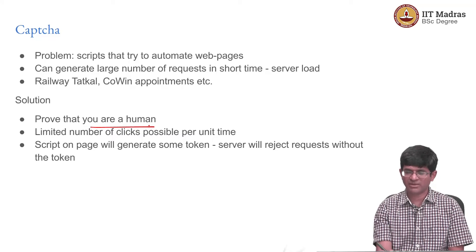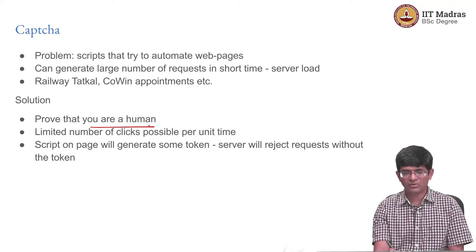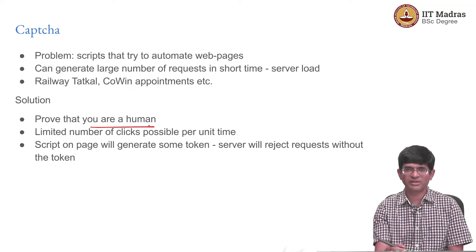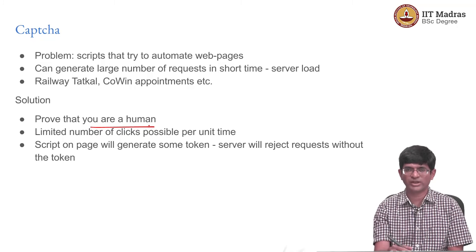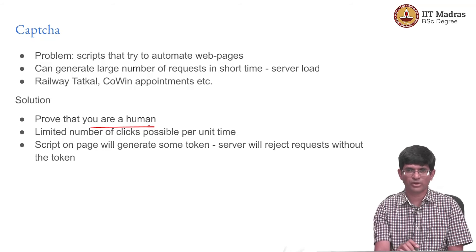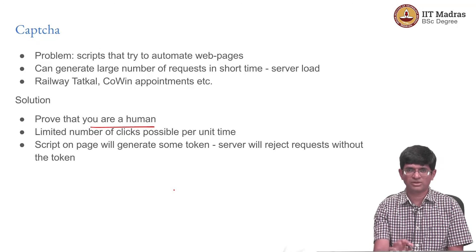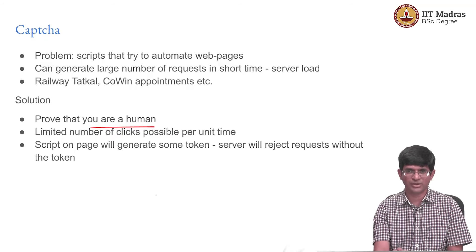Humans have limits on how many clicks and how much data they can enter within a given amount of time. What things like reCAPTCHA from Google do is run a script on the page that tracks what you are doing with the mouse, where you are going, what you are clicking, what you are entering, and builds up information about whether or not you are a human. In many cases, reCAPTCHA just gives you a box — you click it to say 'I am a human' and it accepts it. If it has doubt, it will put up pictures of traffic lights or dogs or cats and ask you to select them.